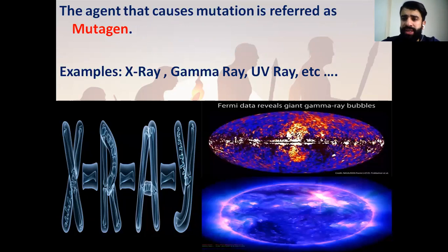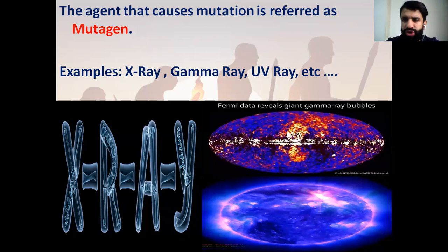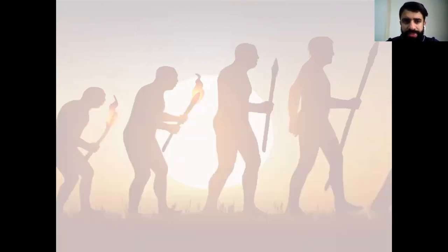The agents that can cause mutations are referred to as mutagens. We talk about them: the X-ray, the gamma-ray, UV-ray, and others.